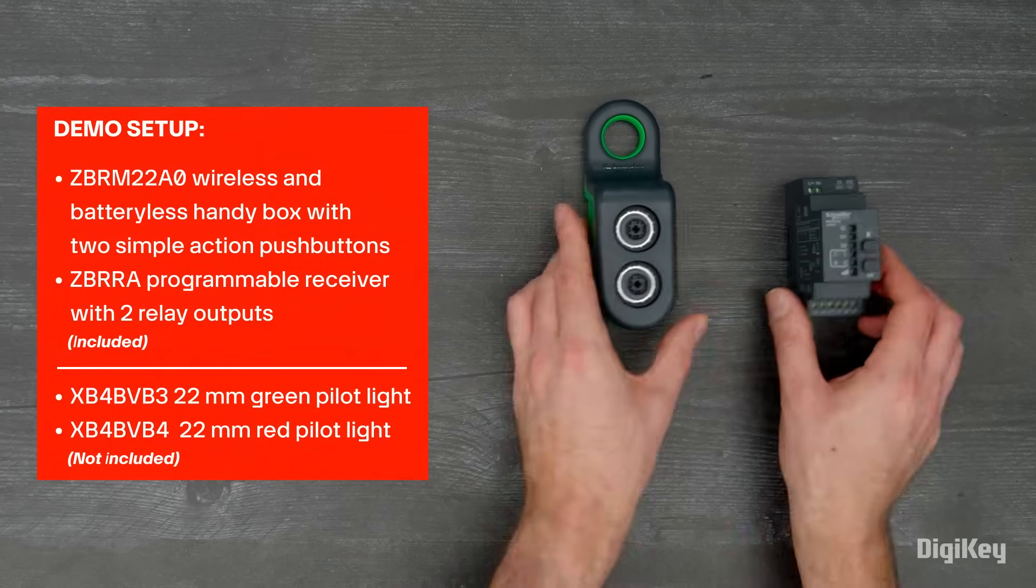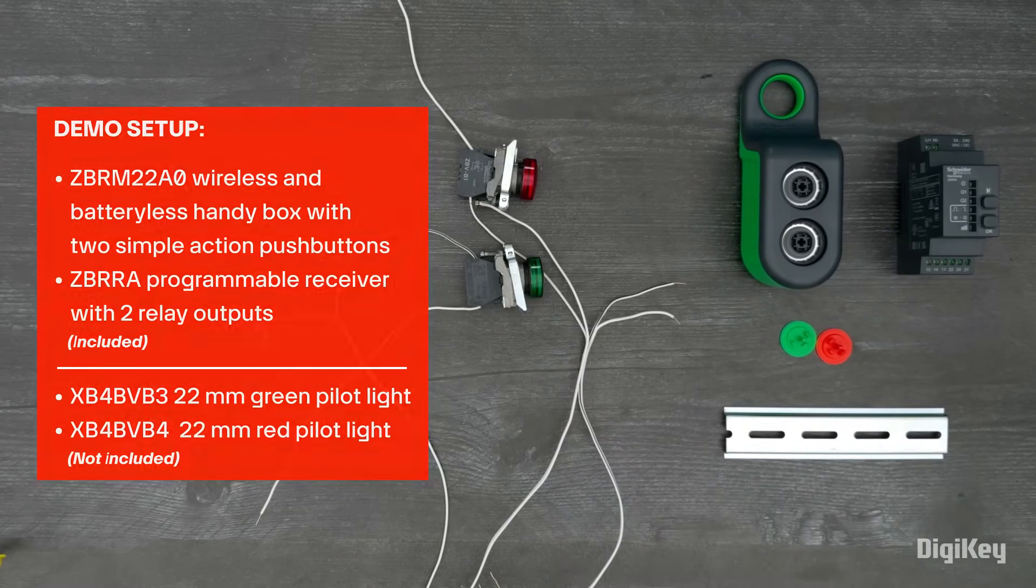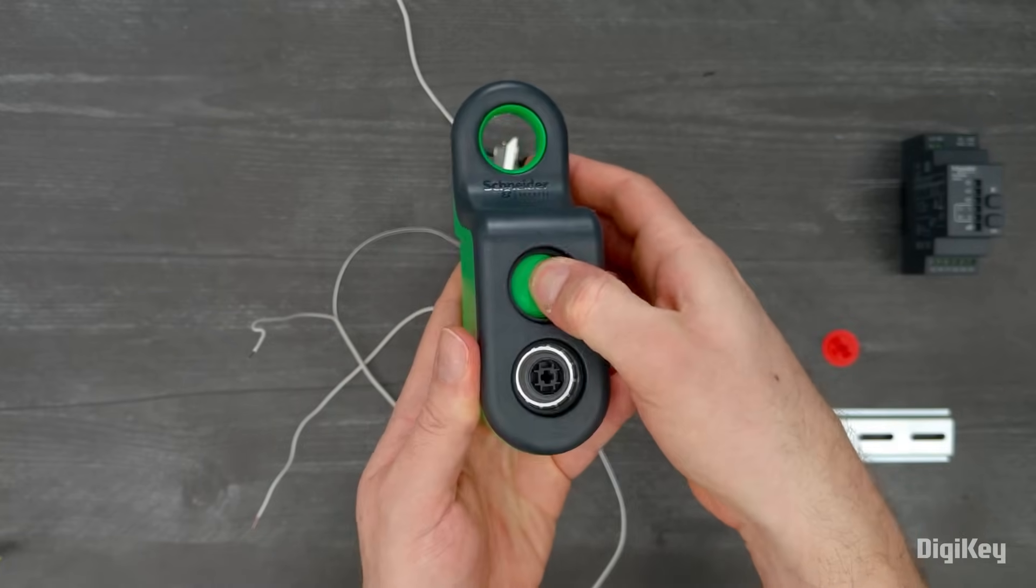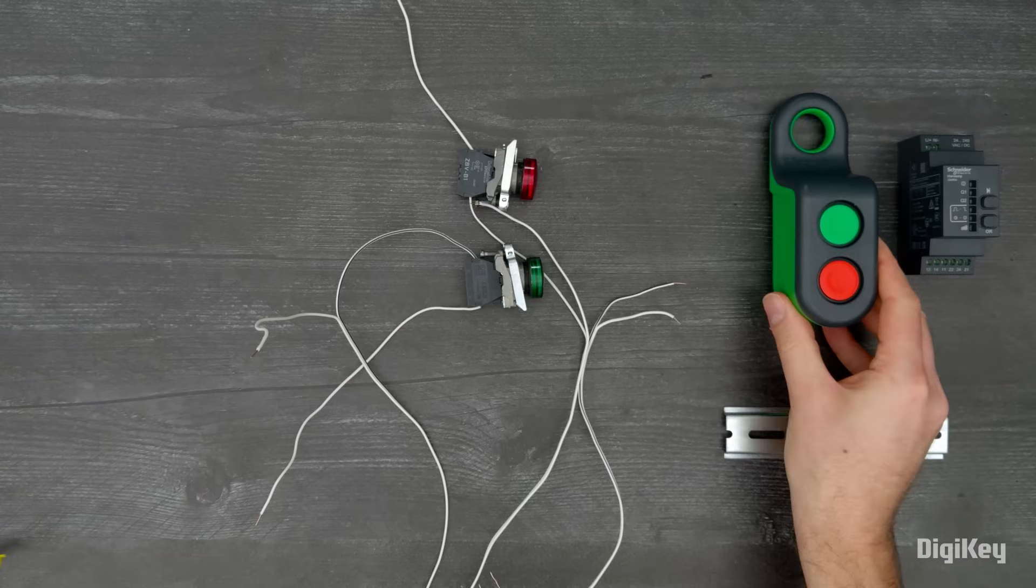In this demo, we'll use the transmitter to actuate two pilot lights connected to the relay outputs. Install the green cap on the top push-button of the handy box. Install the red cap on the bottom push-button of the handy box.